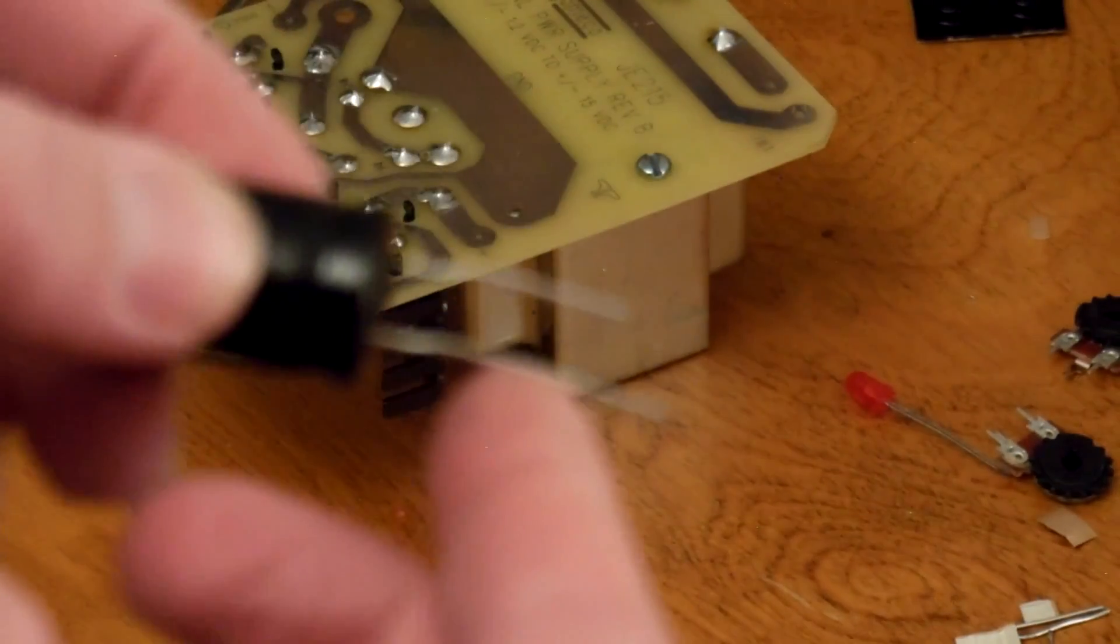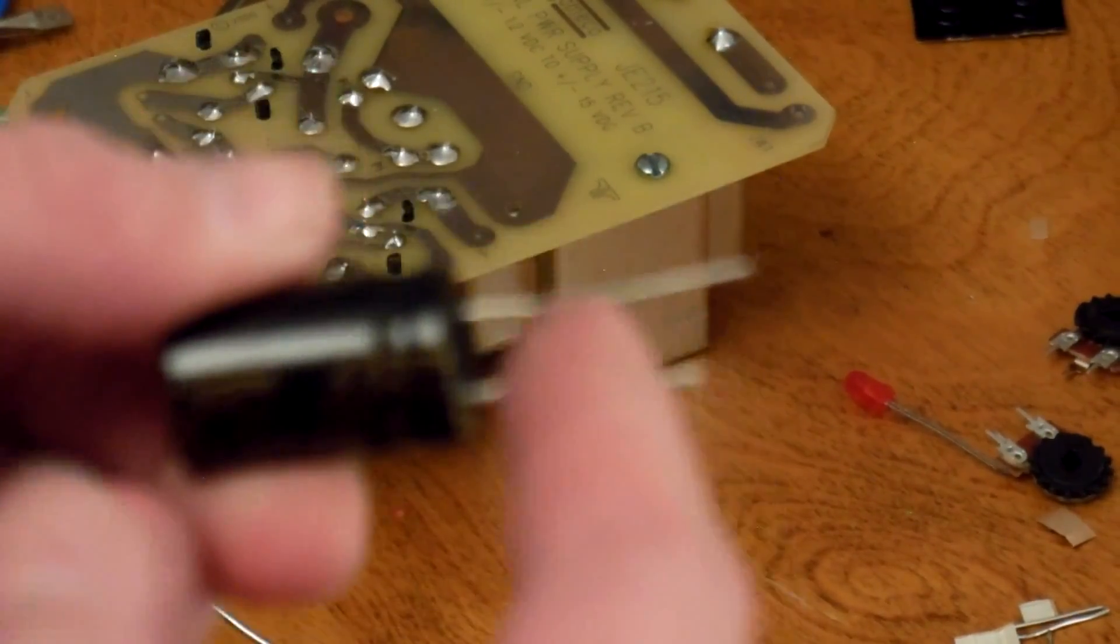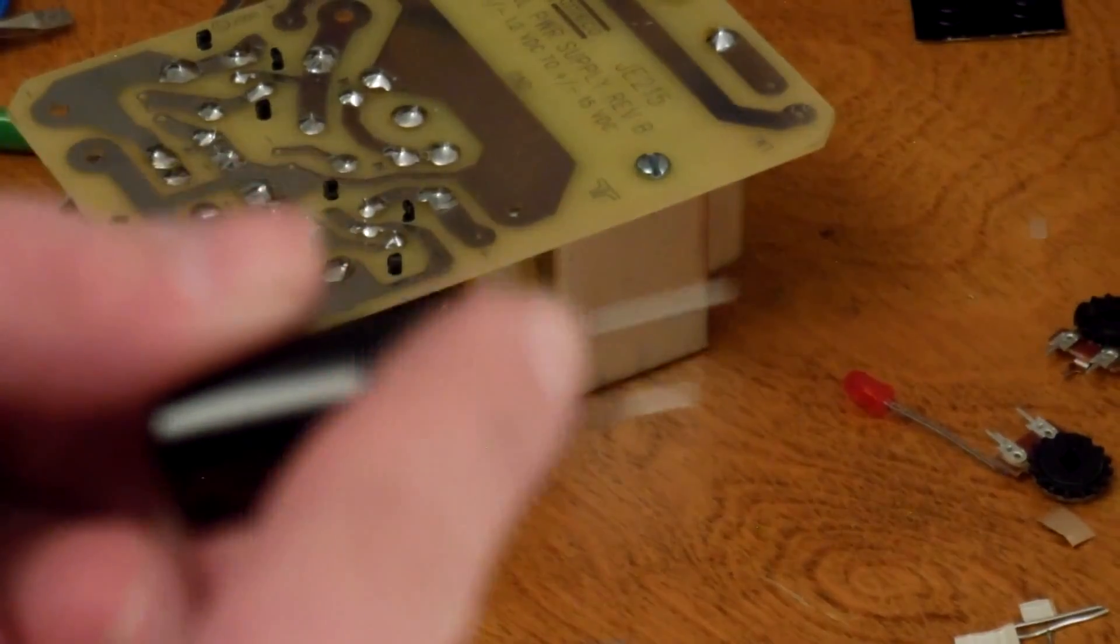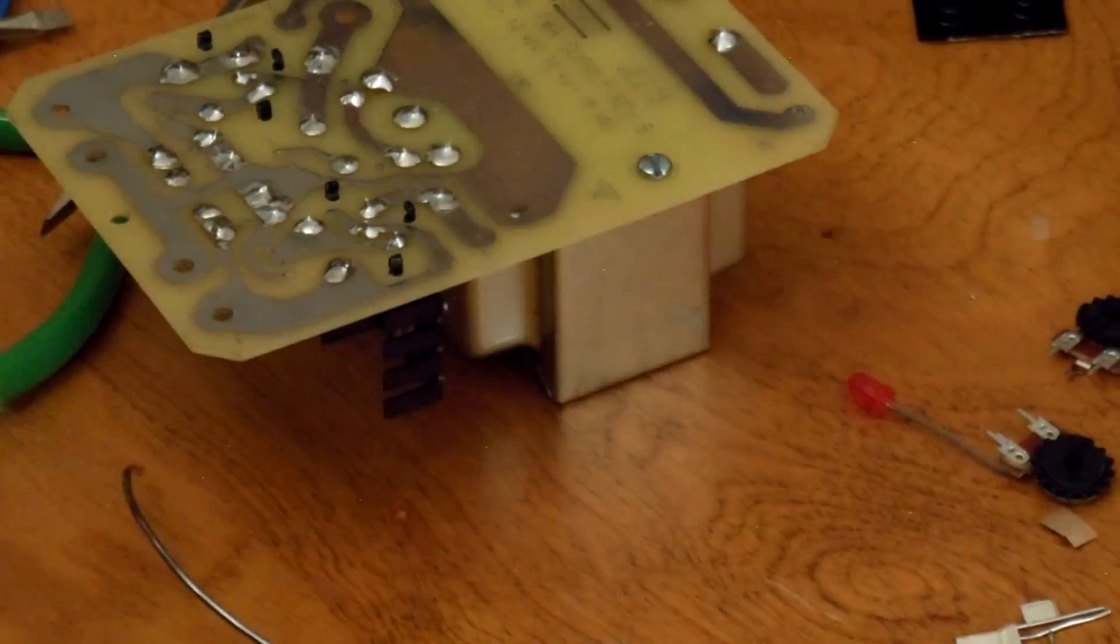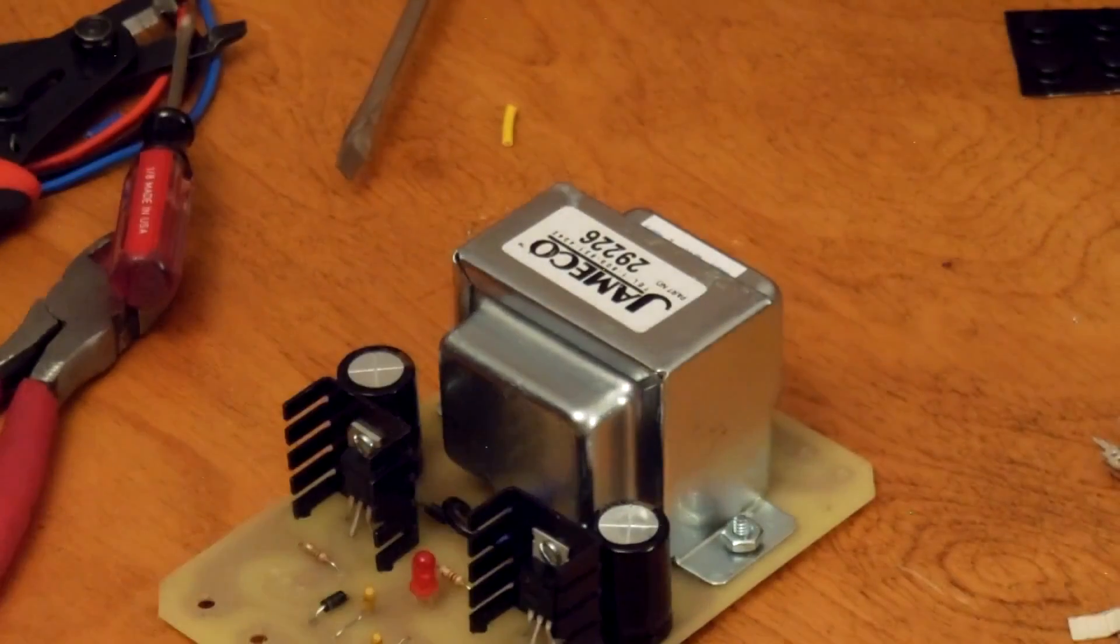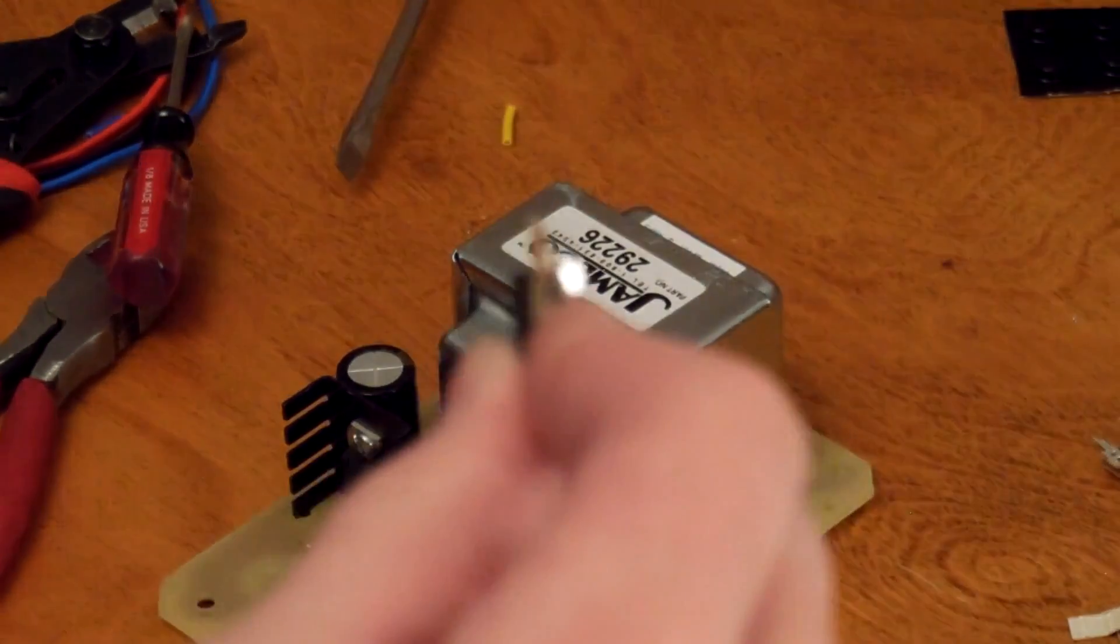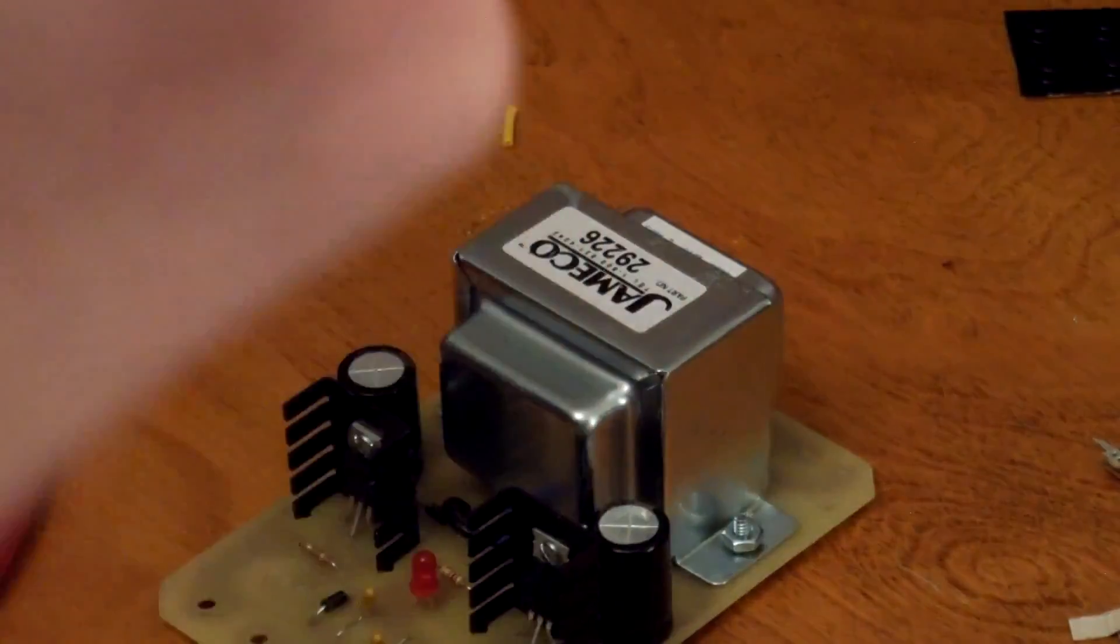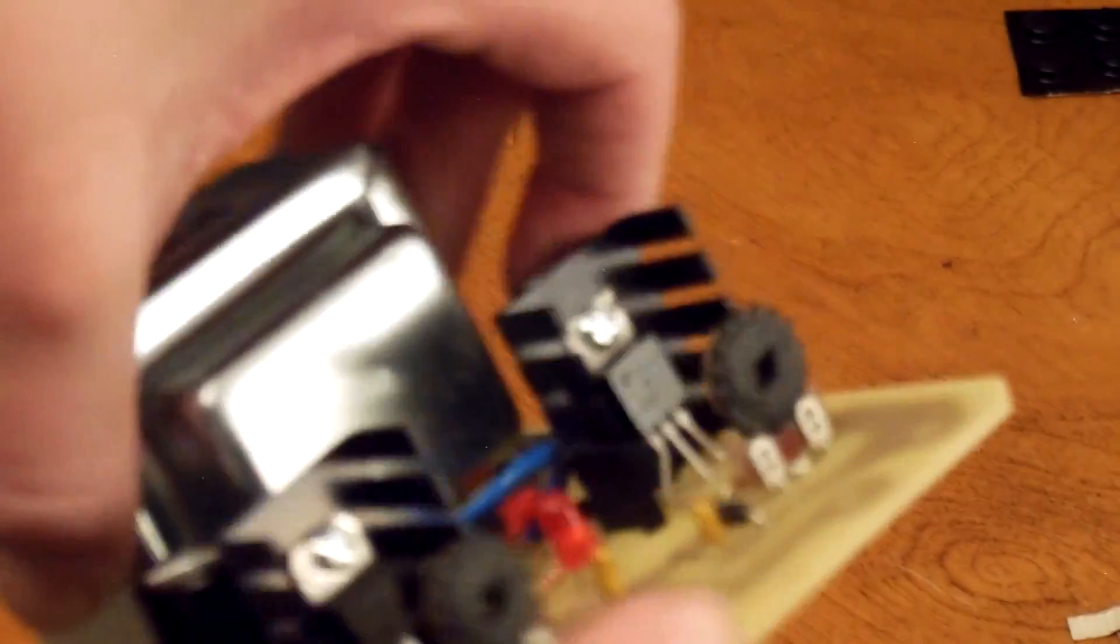This, like the diodes and the other capacitors, have a long leg and a short leg. And the short leg is negative, long leg is positive. The potentiometers included have bent leads like that, so we're going to straighten them out. Once we get these potentiometers soldered in place, we're going to put the power cord on.